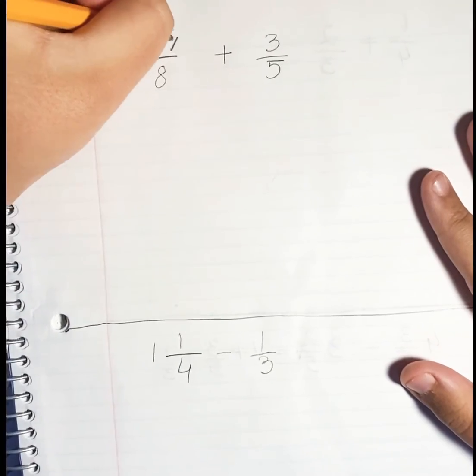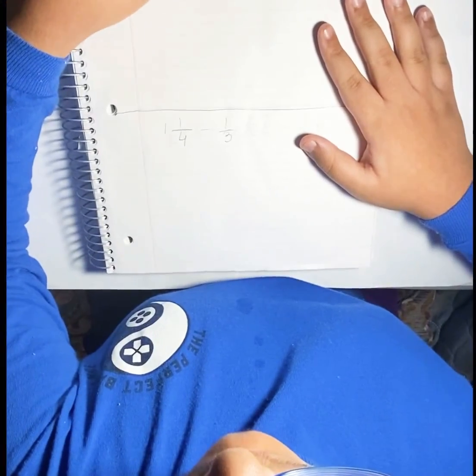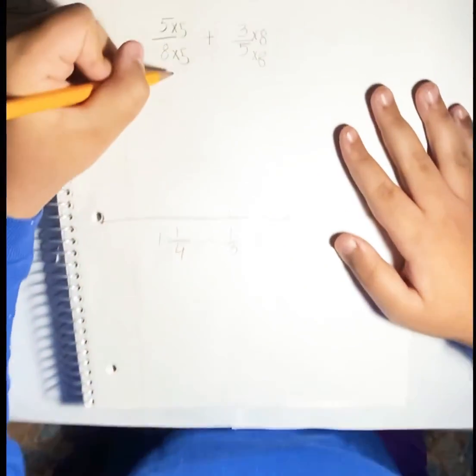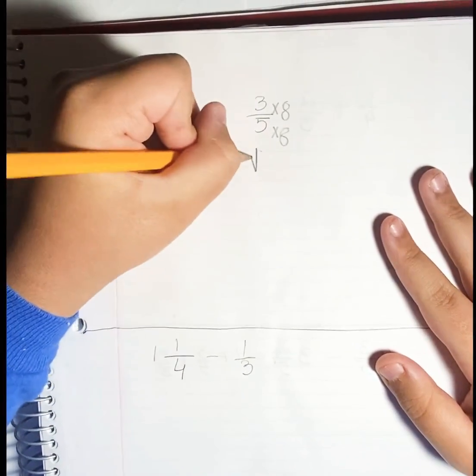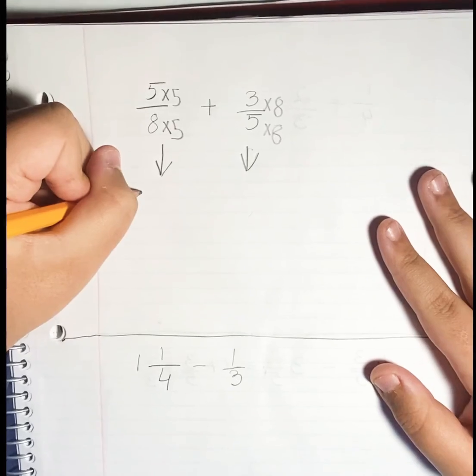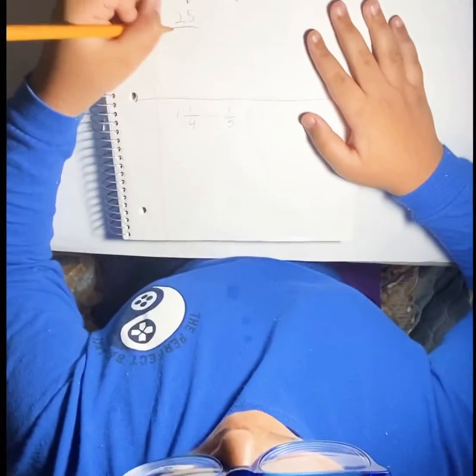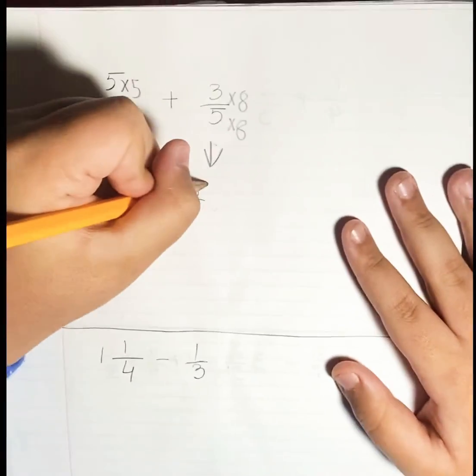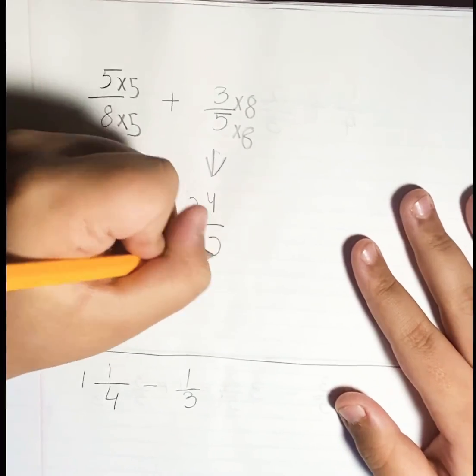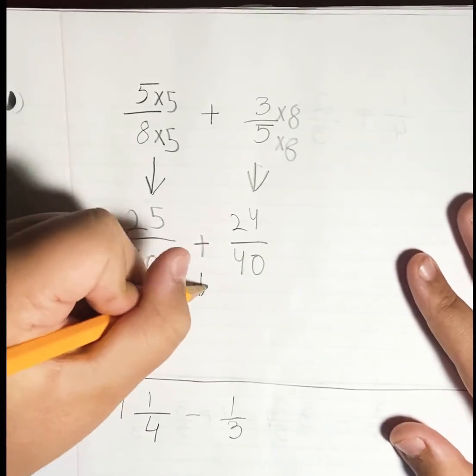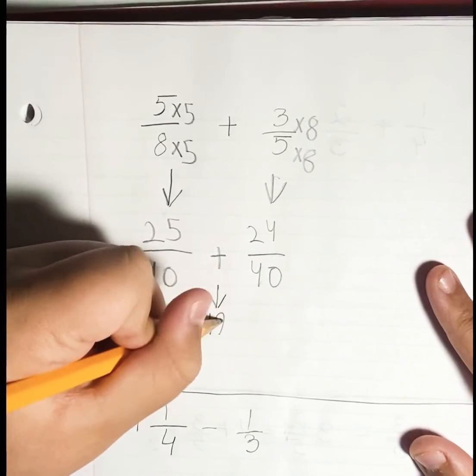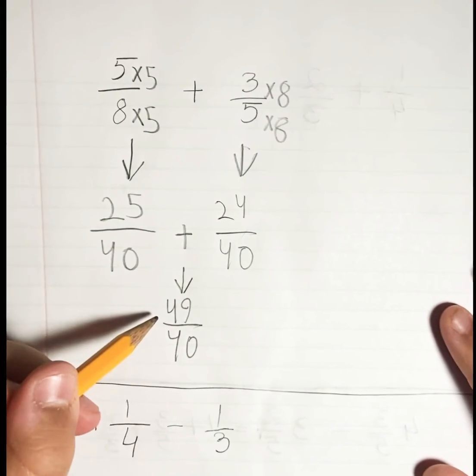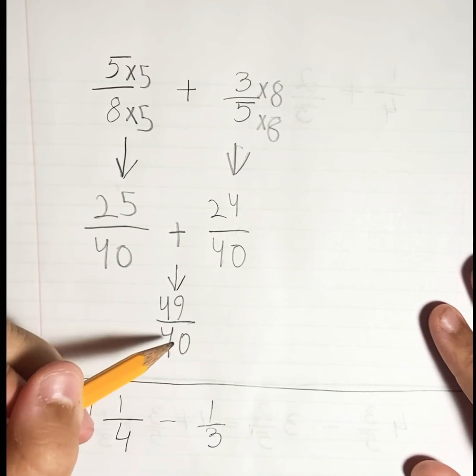So we have to multiply this equation by 5 and this one by 8. Now that we're doing that, we have to bring them down, so we write their answers right here. So 5 times 5 is 25 over 40, then we add the plus 24/40. And now when we add these up, we get 49/40.